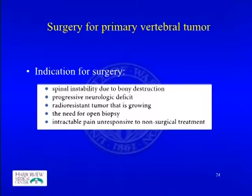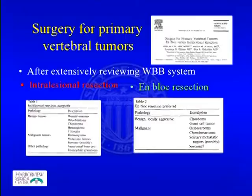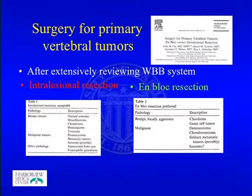In general, surgical indications for primary spinal tumors include spinal instability due to bone destruction, progressive neurological deficit, radiation-resistant tumor that is growing, need for open biopsy, or intractable pain unresponsive to non-surgical treatment. In 2008, Dr. Reins and Dr. Gorgaslan published a paper after extensively reviewing the Boriani staging system, recommending intralesional resection for some benign and malignant tumors and en bloc resection for others.